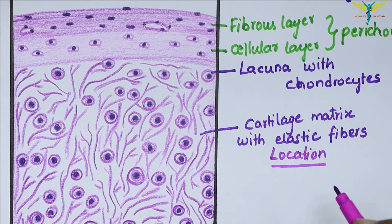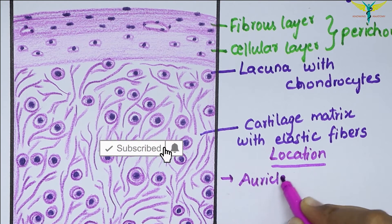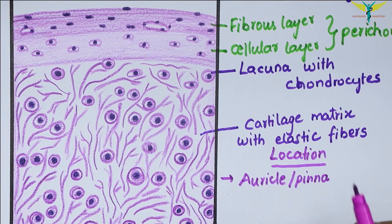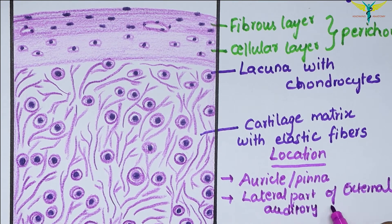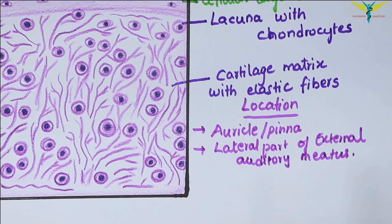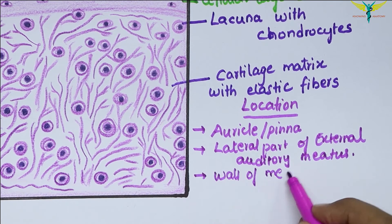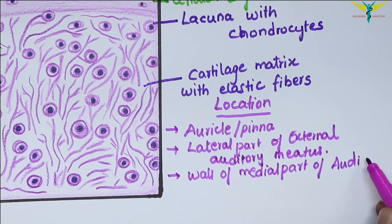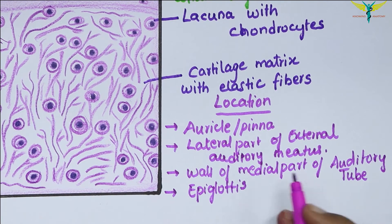Now let's talk about the distribution of the elastic cartilage. The elastic cartilage forms the skeletal basis of the auricle or pinna of the ear. It also forms the lateral part of the external acoustic meatus, and it is present in the wall of the medial part of the auditory tube.